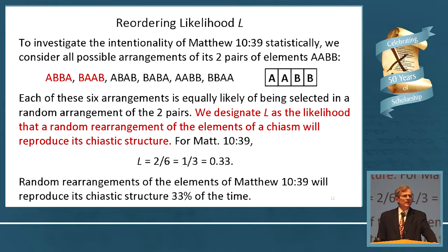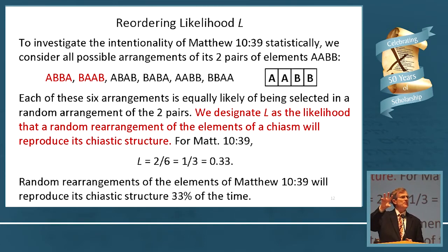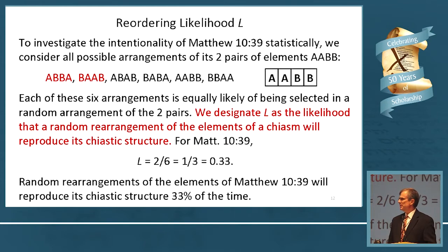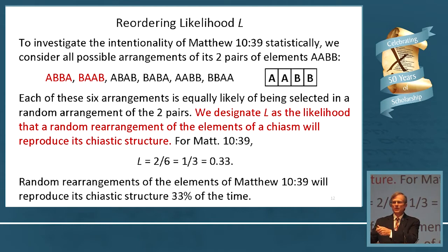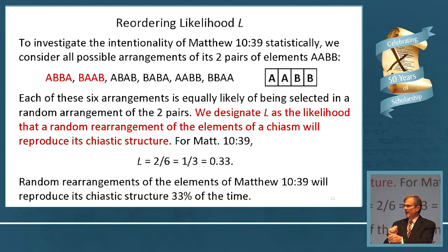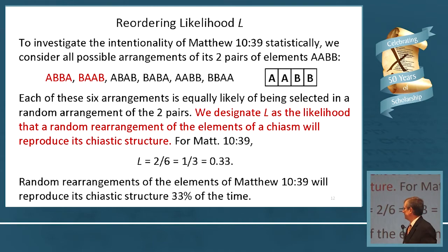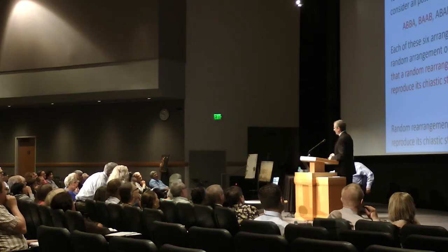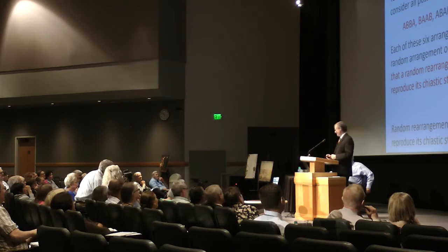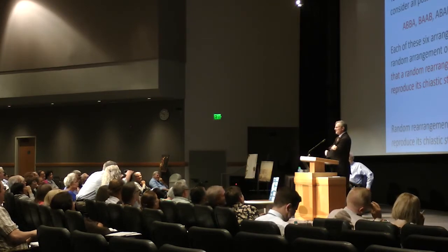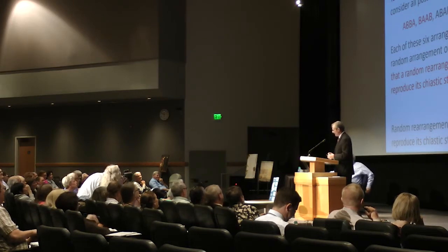Introducing the reordering likelihood. The idea here is this: I have an A, another A, a B, and another B. I'm going to take four pieces of paper — write A on the first, A on the second, B on the next two. I throw them in a hat, jumble them up, pull them out at random and get a random order. How many different orderings can you get?